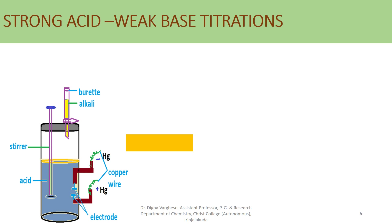Now we are discussing the strong acid-weak base titration. Here, the acid taken in the titration cell is a strong acid — for example, HCl — and the alkali is a weak base, so ammonium hydroxide (NH4OH) is taken in the burette. The titration here is HCl against ammonium hydroxide.